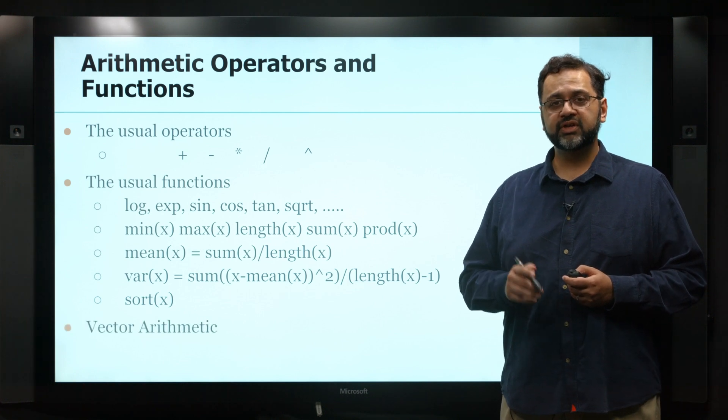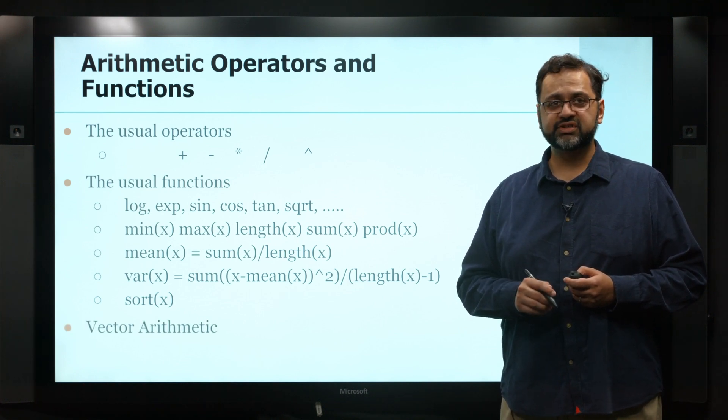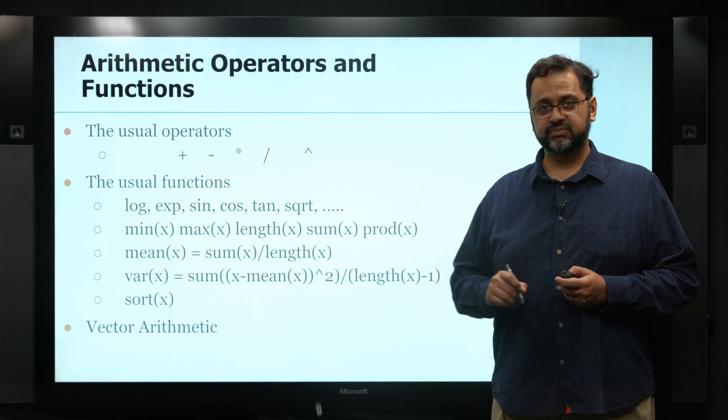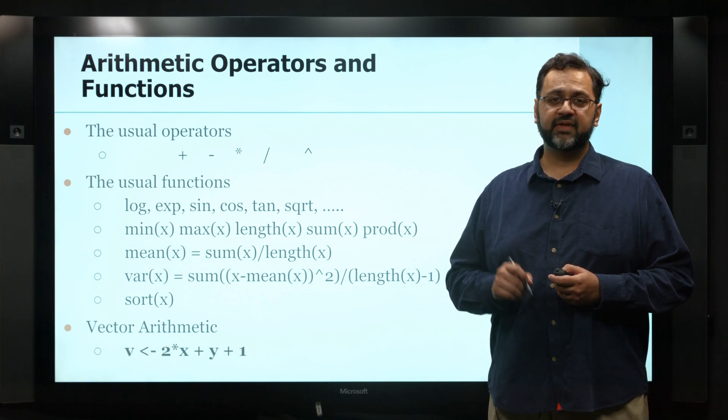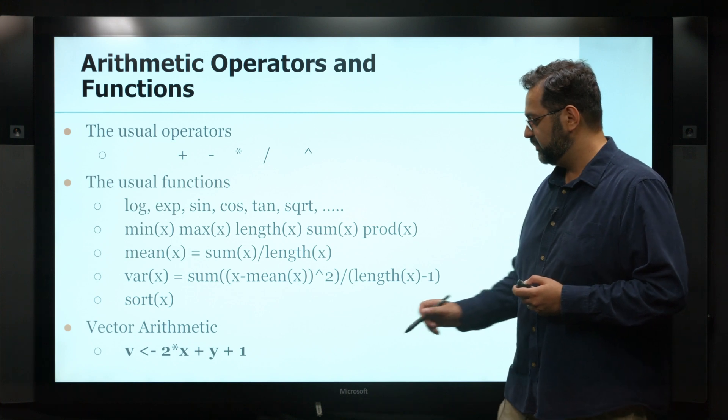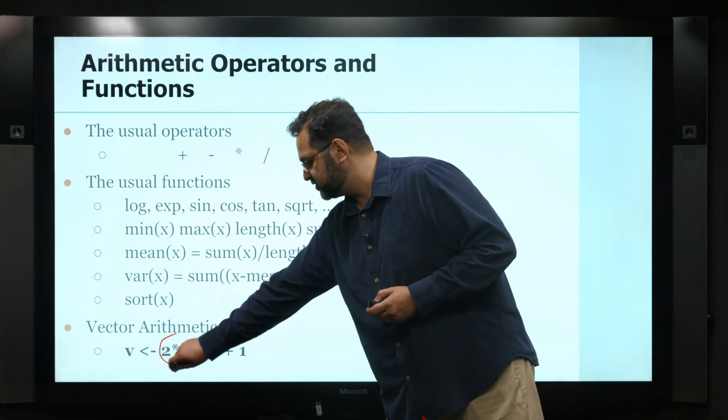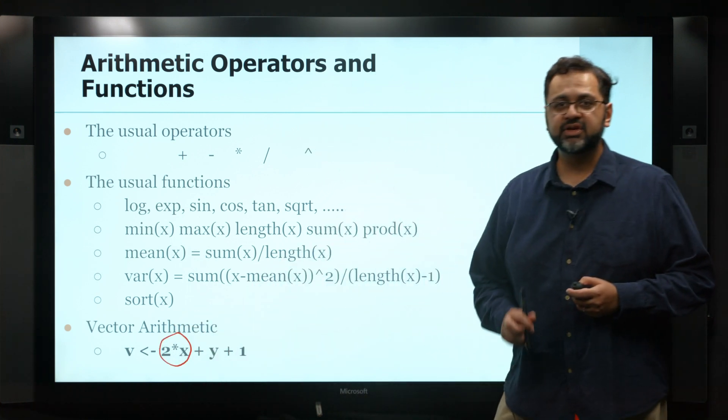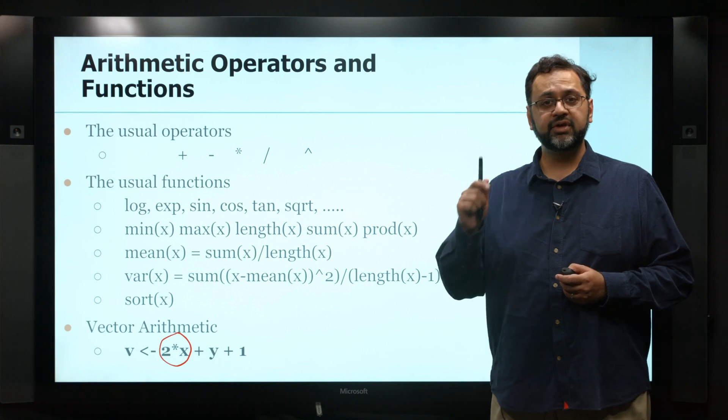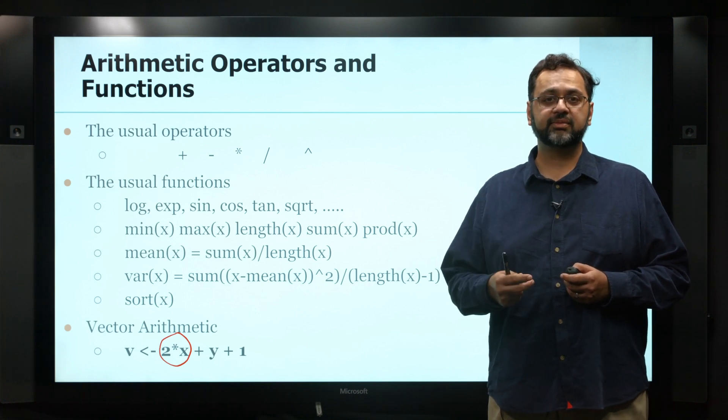But the important thing to note about all these operations is that they are done at a vector-by-vector basis. What does that mean? That means that when you have an expression where it says 2 times x, it means it will multiply every value in x 2 times.